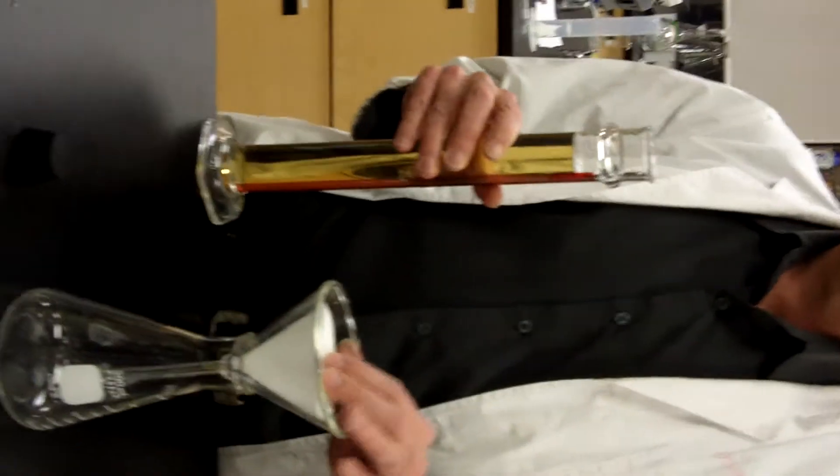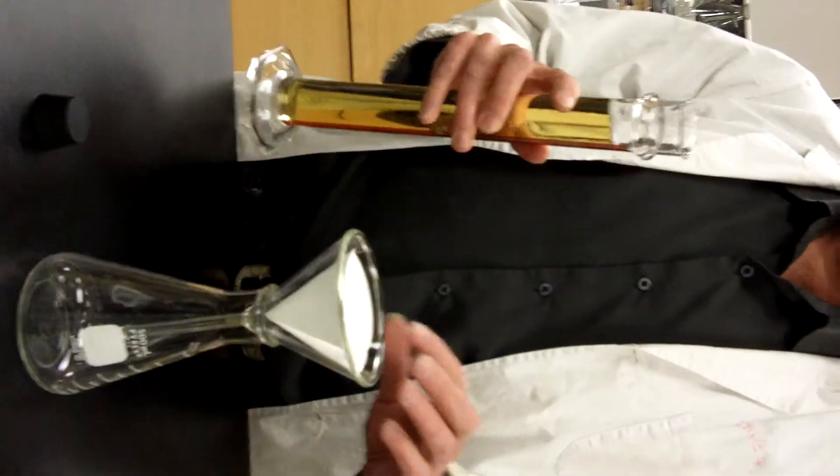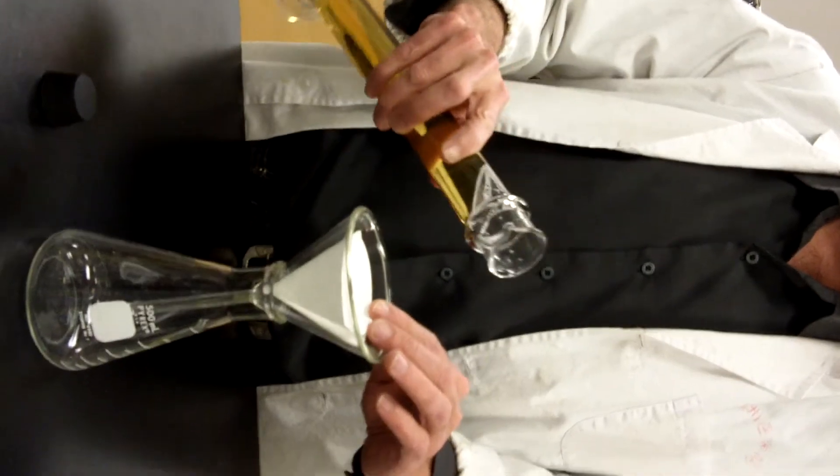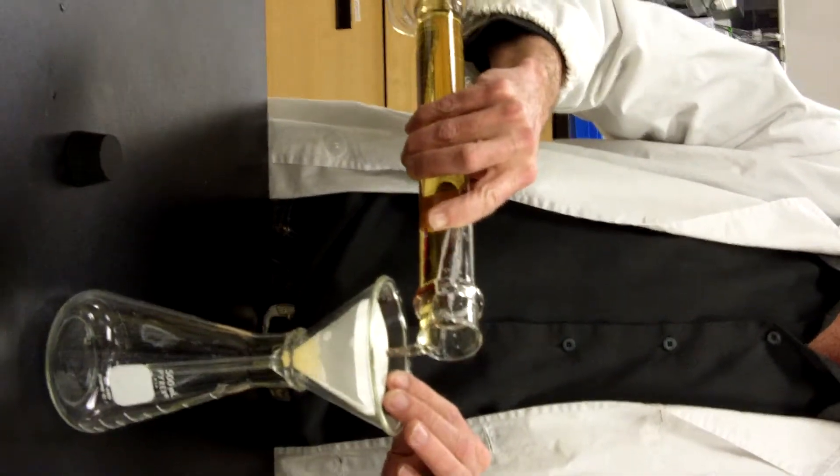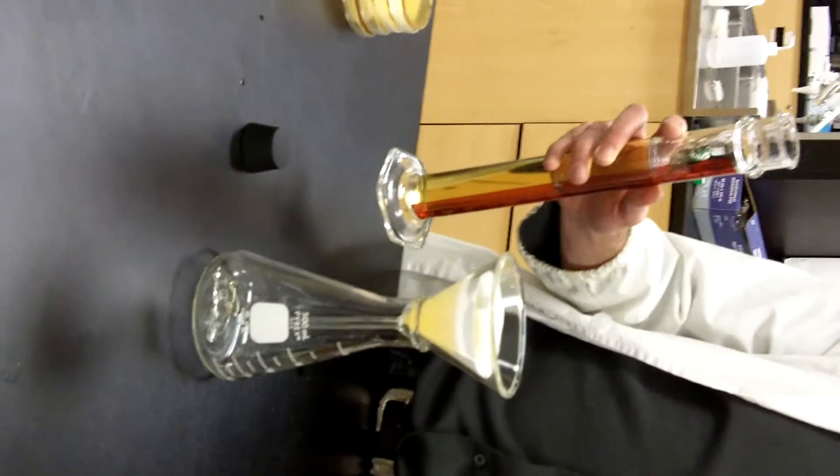Then what we're going to do is do further analysis, which is going to be the color, bitterness, and diacetyl. So what we have to do first is filter the beer on the filter paper. So you just pour it down, and you've got to be patient because it does take some time to go through the filter paper.